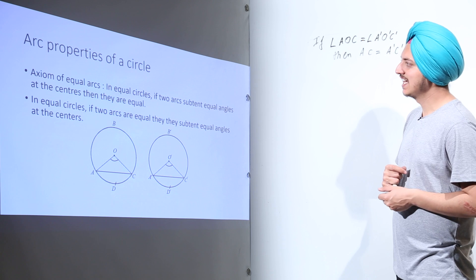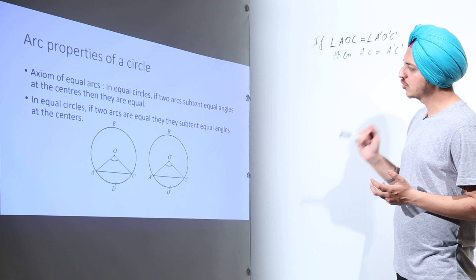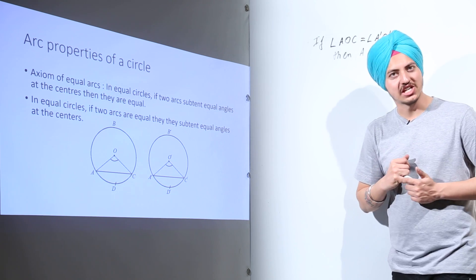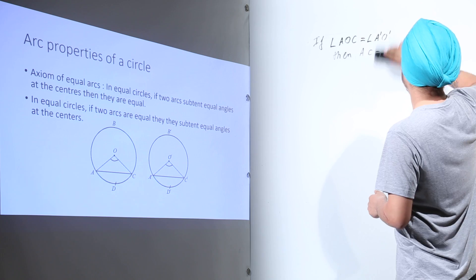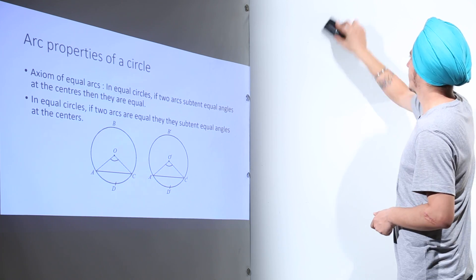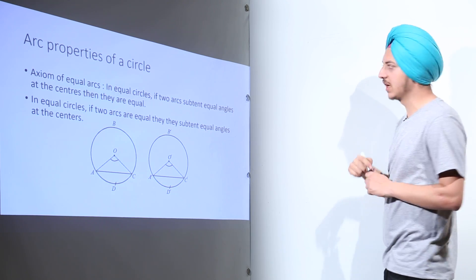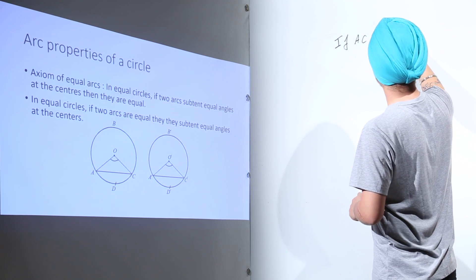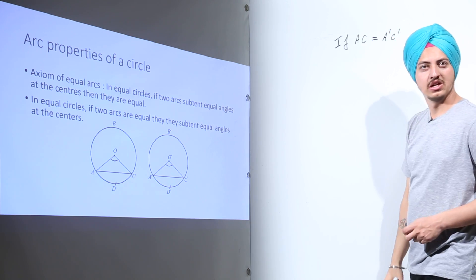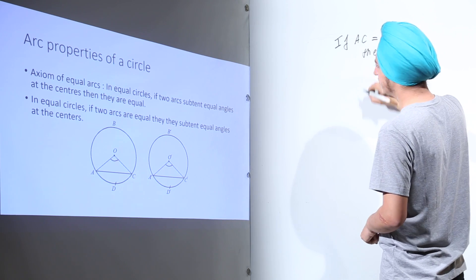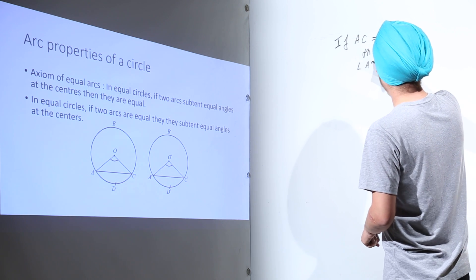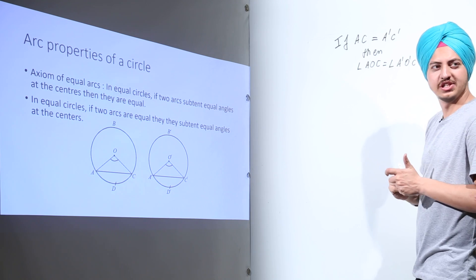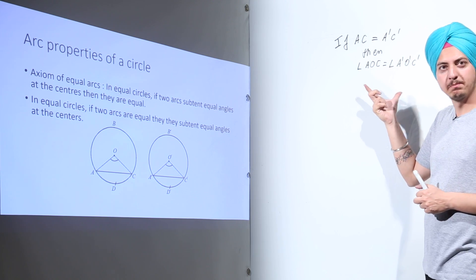The next thing says: in equal circles, if two arcs are equal, then they subtend equal angles at the center. Now these two conditions will be reversed. Again, the two circles are equal — this is given — and what else is given is that AC is equal to A-dash C-dash. Then angle AOC will be equal to angle A-dash O-dash C-dash. This is what these two theorems mean.